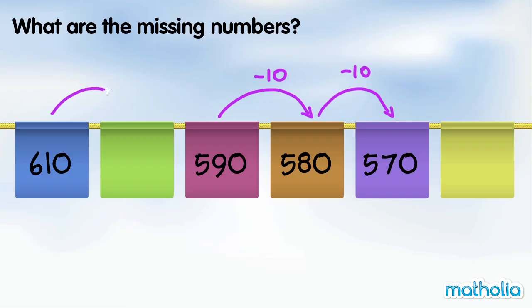610 minus 10 is 600. 570 minus 10 is 560. The missing numbers are 600 and 560.